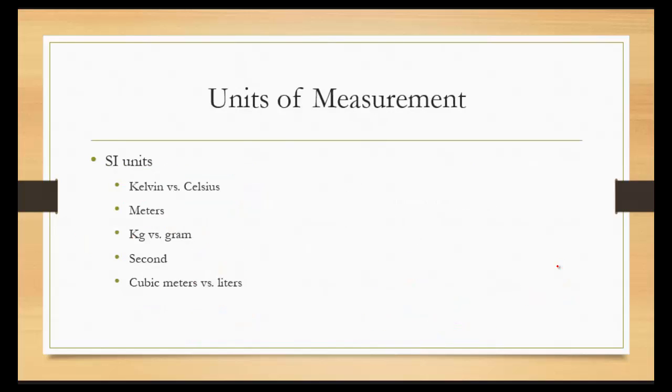So units of measurement. Make sure you realize there's a difference between SI units and metric units. For instance, Kelvins for temperature for SI, for Celsius, it's metric. Meters is the same for both. In SI units, the mass is kilograms, while in metric, the mass is grams. Seconds is the same for both. And then finally for volume, cubic meters is considered to be SI, while liters is considered to be metric.